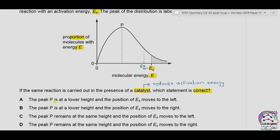Part A: peak P is at lower height and Ea moves to the left — incorrect, peak P does not change. Part B: peak P is at lower height — also incorrect. Part C: peak P remains at the same height and the position of activation energy moves to the left — correct, as the catalyst reduces activation energy. Part D: peak P remains at the same height but activation energy moves to the right — incorrect, catalyst decreases activation energy, not increases it. The correct answer is C.